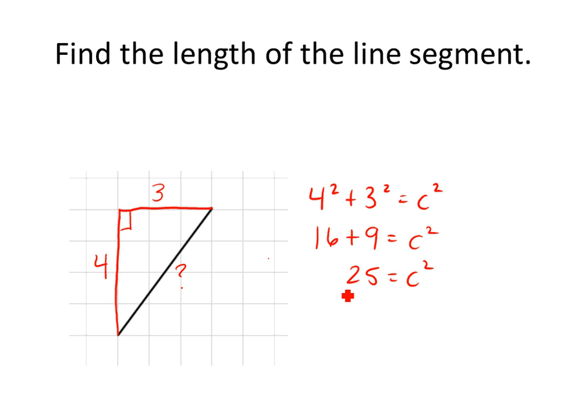16 plus nine is 25, that's going to equal c squared. You take the square root of both sides. So c is going to be the square root of 25, which is equal to five. So the length of our question mark is five units.